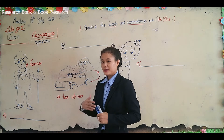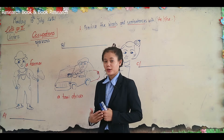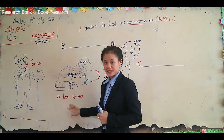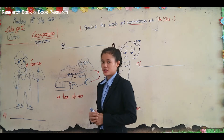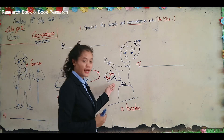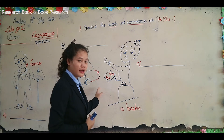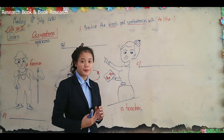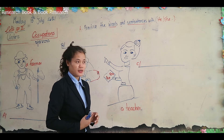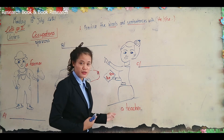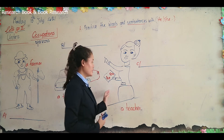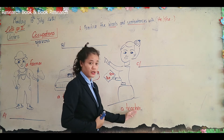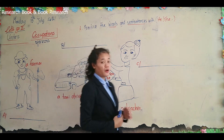Okay, good. Repeat after me: a taxi driver. And the last picture — can you tell me about this picture? Excellent job! It is a teacher. A teacher is a person who teaches, especially in a school. Again: a teacher.